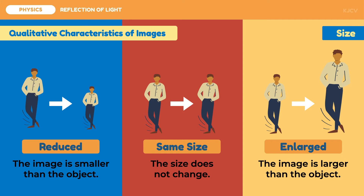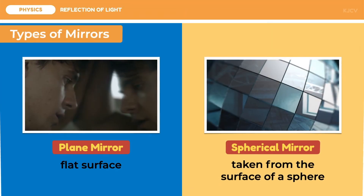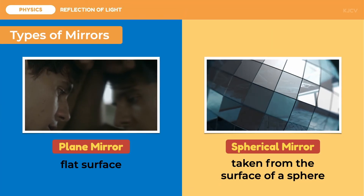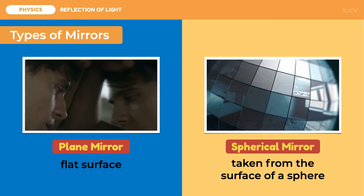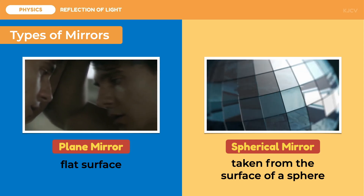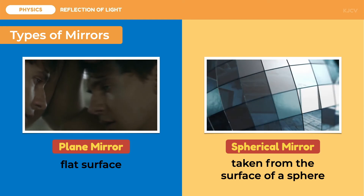So there we have our three qualitative characteristics of images. We can also qualitatively describe the location of the image depending on the points on the mirror; however, we will discuss how to qualitatively pinpoint the image in the next lessons. For now, we are going to focus on identifying the two classifications of mirrors and their parts, which will be used for the qualitative description of the location of the image.